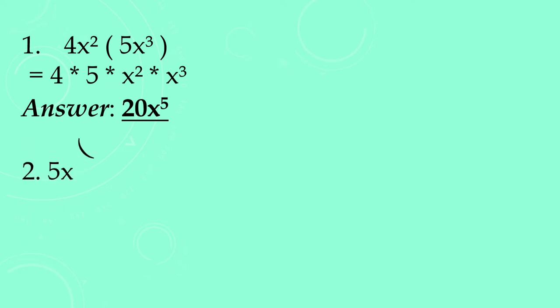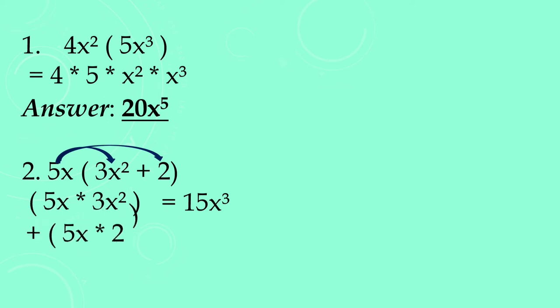Let's have number 2: 5x times quantity 3x² plus 2. Ito naman ay monomial by binomial, so distributive property lang po yung ating gagaminin. 5x times 3x² is equals to 15x³. Next, 5x times 2 is equals to 10x. So sagot natin ay 10x. Ganun pa rin, i-multiply natin yung mga numbers at yung mga variables, i-apply lang natin yung law of exponents. So ating sagot ay 15x³ plus 10x.